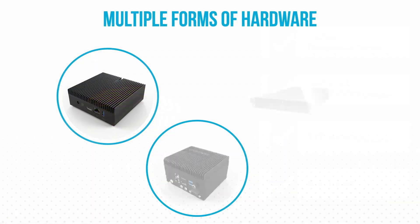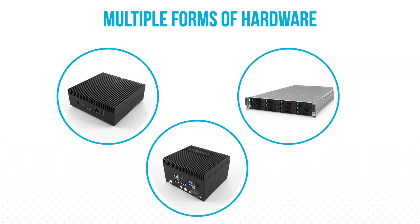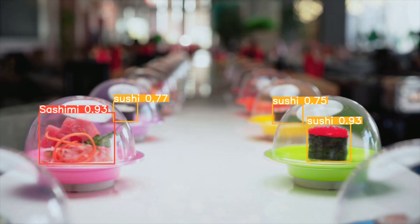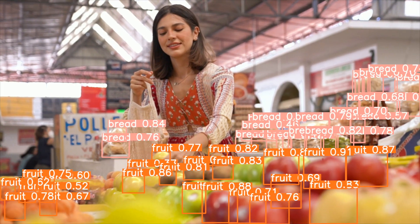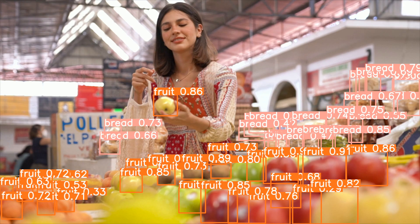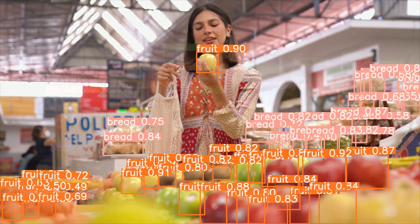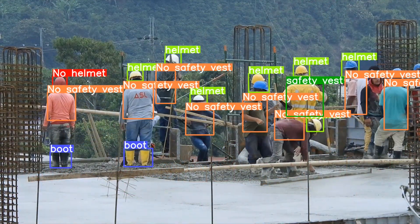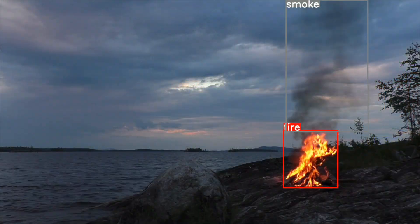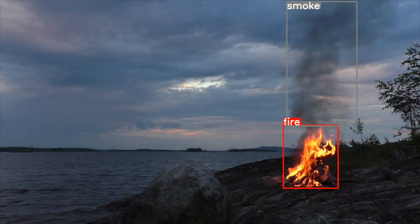Our hardware is designed to fit your specific needs, from industrial personal computers to rack-mount versions, ensuring you get the power you need without overspending. ViSense isn't just hardware — our advanced AI models can detect a wide range of activities, from monitoring retail hot zones to ensuring safety in construction zones. And with the ability to run multiple models simultaneously, the possibilities are endless.